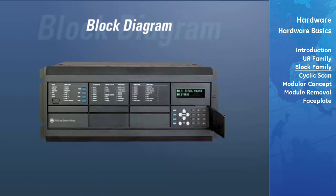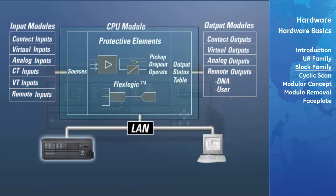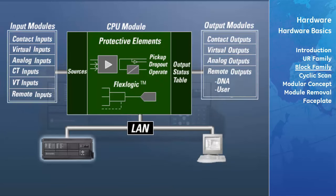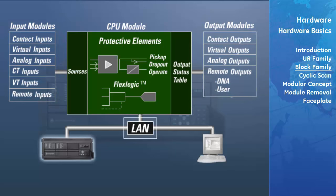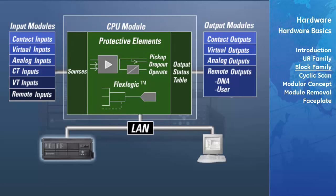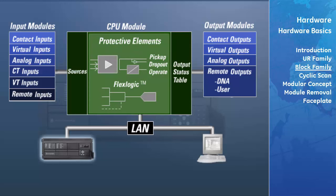The Universal Relay is a microprocessor-based device containing a central processing unit which handles multiple types of input and output signals. The UR can communicate over a local area network with a wide range of devices such as operator interfaces, a computer with programming software, or another relay. The CPU module contains firmware which provides protection elements in the form of logic algorithms and programmable logic gates. These protection elements and logic gates can be combined to create a protection and control scheme customized to the user's needs.